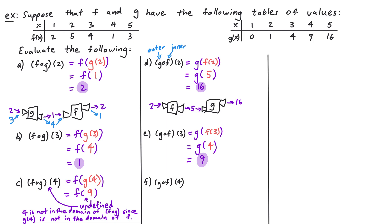We have one last one here: g composed with f of 4. This is g of f of 4. We start by computing f of 4. Going to the table for f, when the input is 4 the corresponding output is 1. So f of 4 is equal to 1. Now we take that number and plug it into g. Going to the table for g, when the input is 1 the corresponding output is 0. So g of 1 is equal to 0, which means g composed with f of 4 is equal to 0.